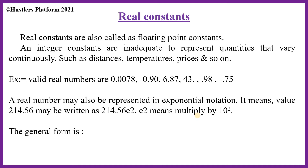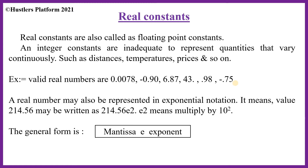The second type of numeric constant is real constants. Integer constants cannot contain a floating point or fractional part, but real constants do contain floating point numbers — that's why they are also called floating point constants. Integer constants are inaccurate to represent quantities that vary continuously such as temperature, heights, distances, and prices. A real number may also be represented in exponential notation, also called scientific notation, where e2 means multiply by 10 raised to 2. Examples: 0.0078, -0.90, 6.87, 43.98, -0.75 — all are valid real numbers.